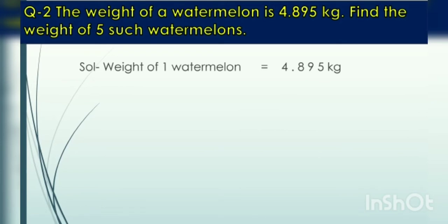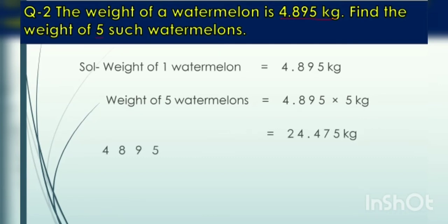Solution: weight of 1 watermelon 4.895 kg. Then weight of 5 watermelons. You have to write down the weight and multiply with the number given. After this you have to arrange them in column form and the multiplication will be done. The answer is 24.475 kg.